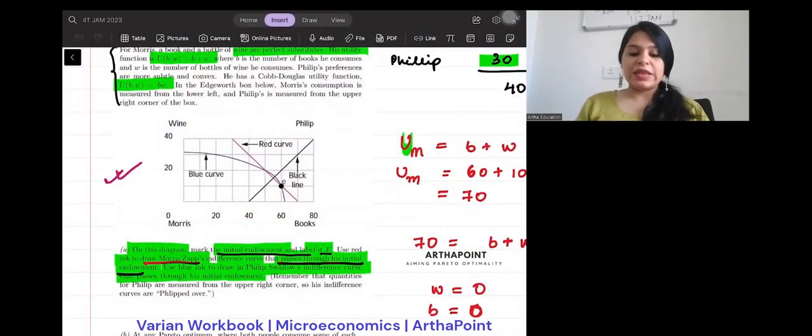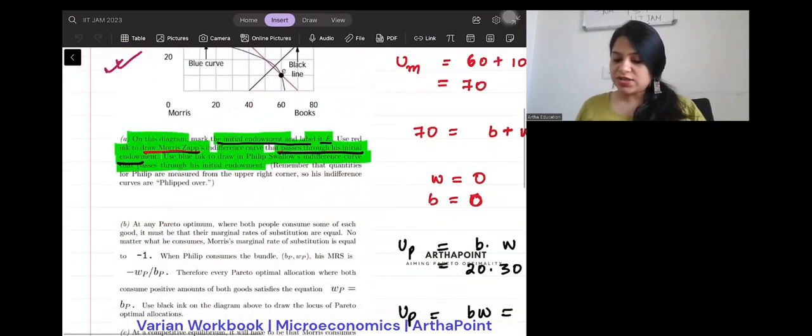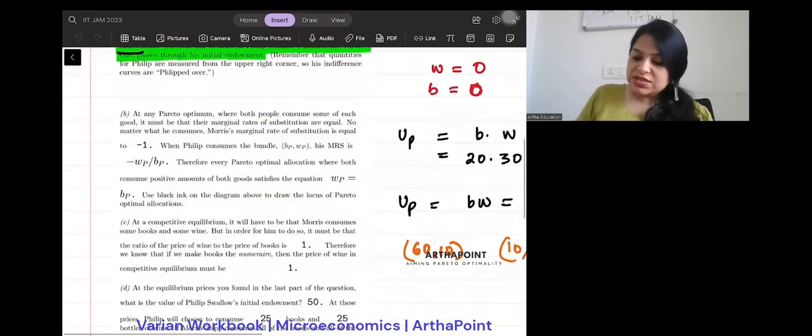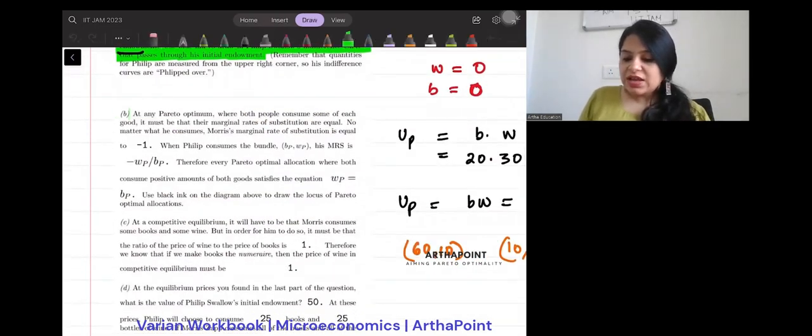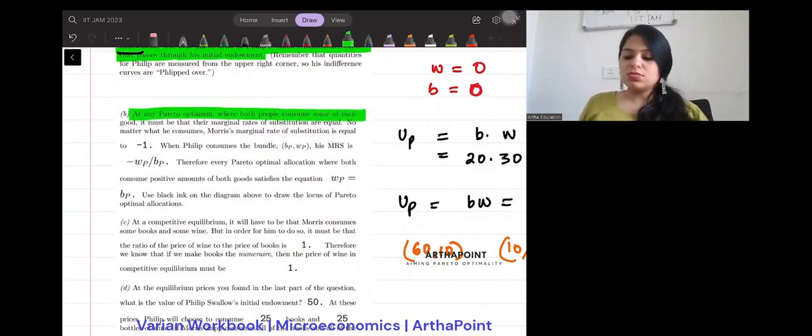Okay, we will continue with this Varian workbook question and let us look at the next part. It says, at any Pareto optimal where both people consume some of each good, it must be that their marginal rate of substitution is equal. No matter what he consumes, Morse's marginal rate of substitution is equal to minus 1.